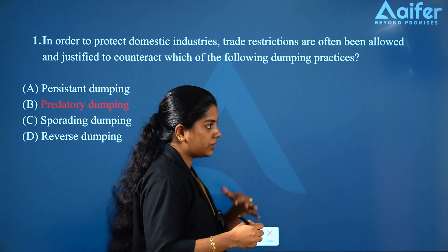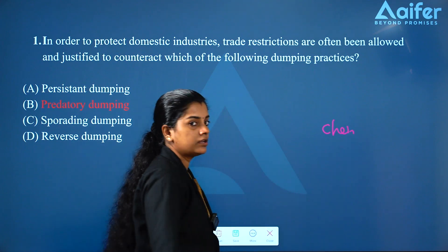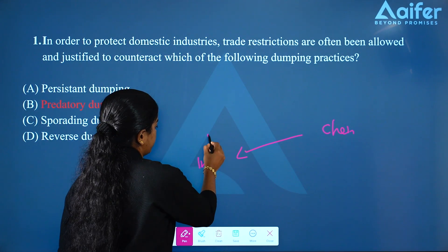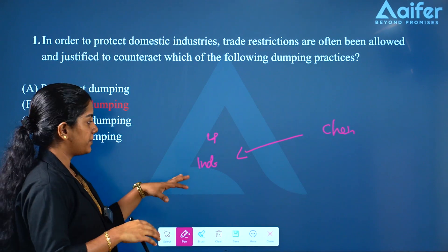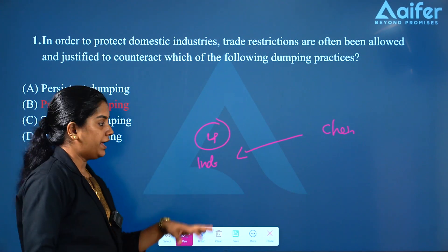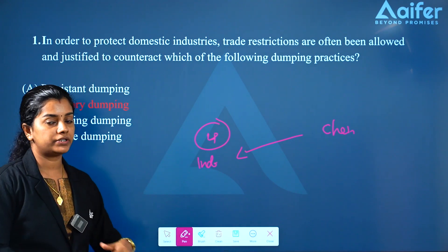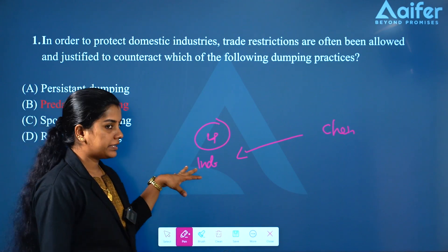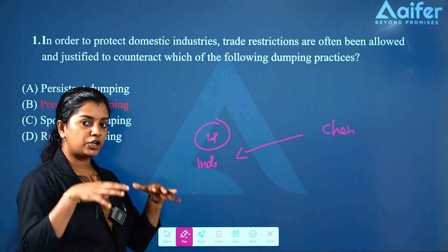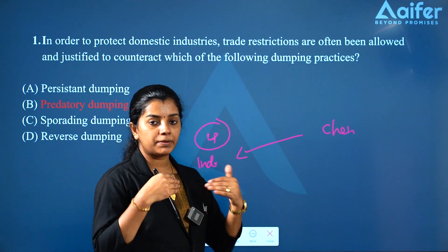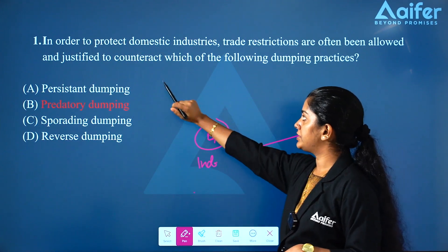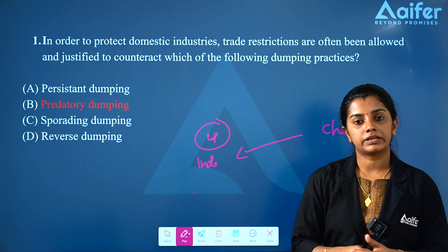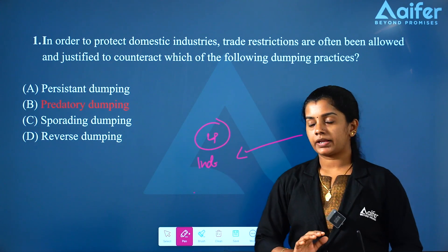China has a low price in India. You can use it for a low price — that means predatory dumping. You can eliminate the low price, then gradually the price increases. That is why we are dealing with India's domestic industries. There is predatory dumping, and we justify trade restrictions. This is the correct answer.